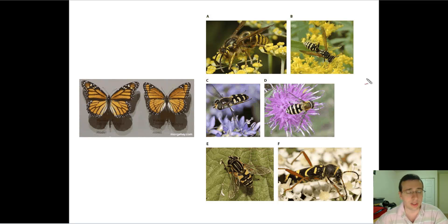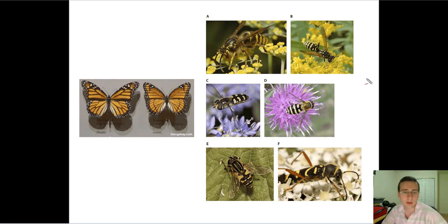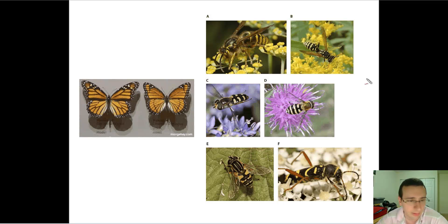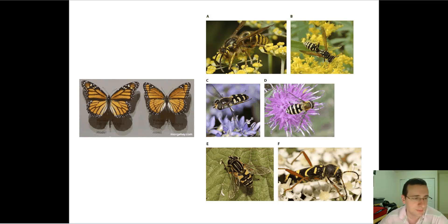The interesting thing is that some of these are not toxic, and they are copying — mimicking — the models which are toxic. This is what we call Batesian mimicry, named after Bates, who discovered it.